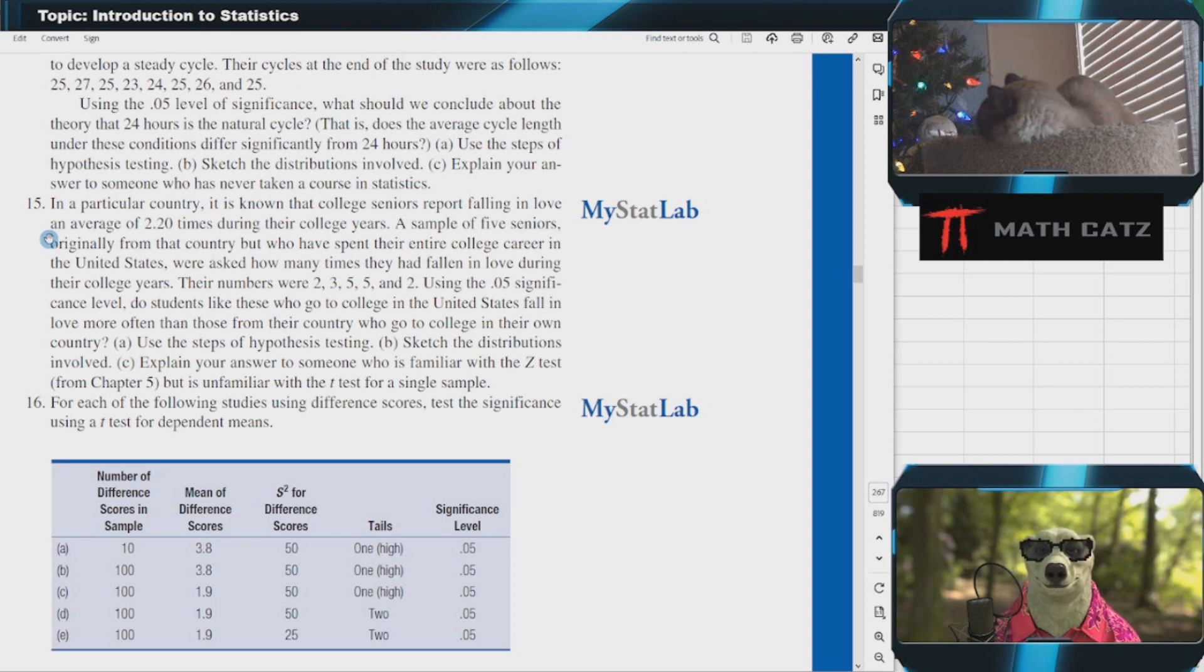Their numbers were 2, 3, 5, 5, and 2. Using the 0.05 significance level, do students like these who go to college in the United States fall in love more often than those from their country who go to college in their own country? Use the steps of hypothesis testing.